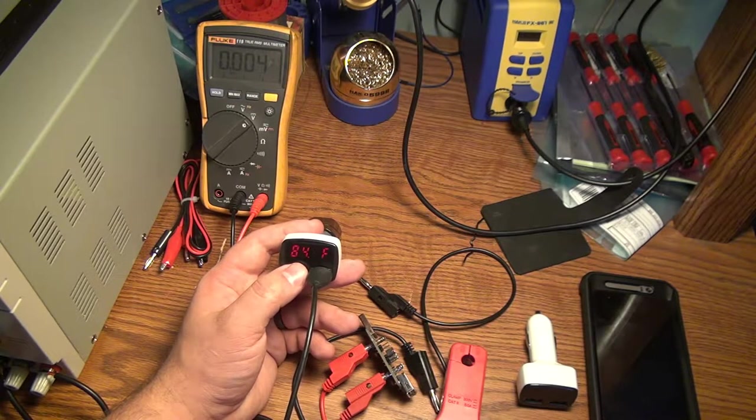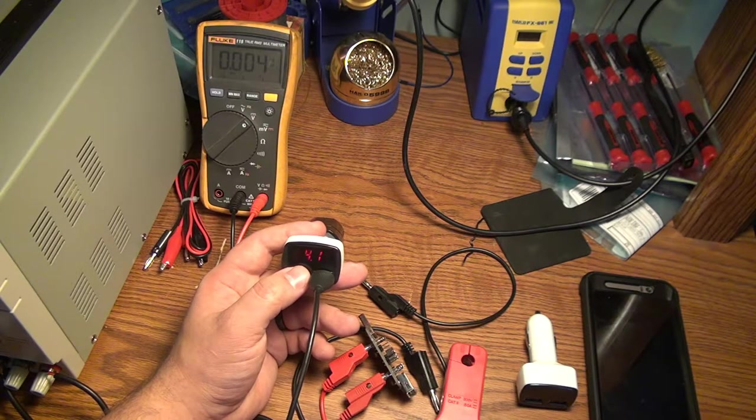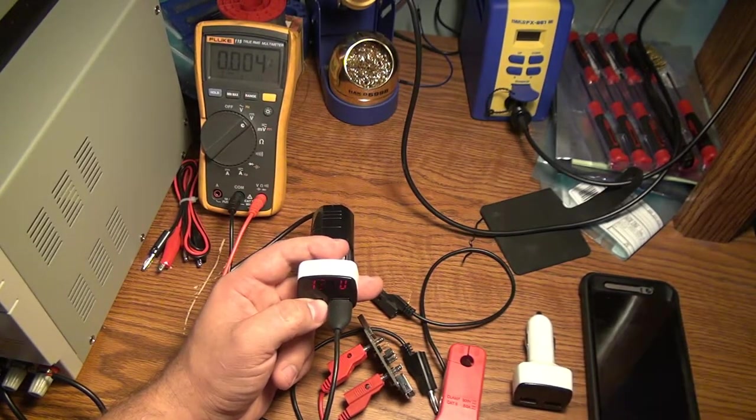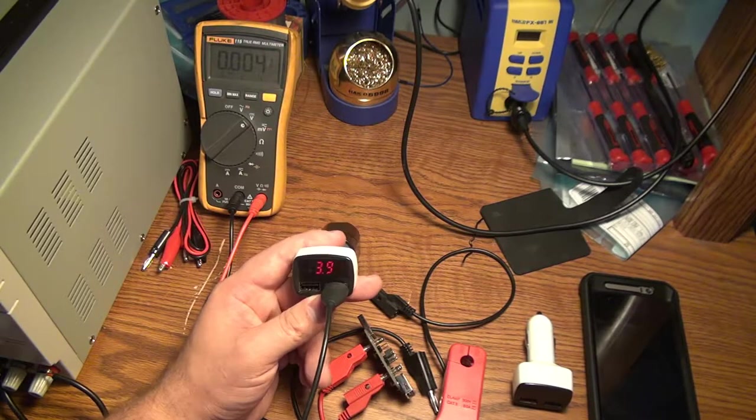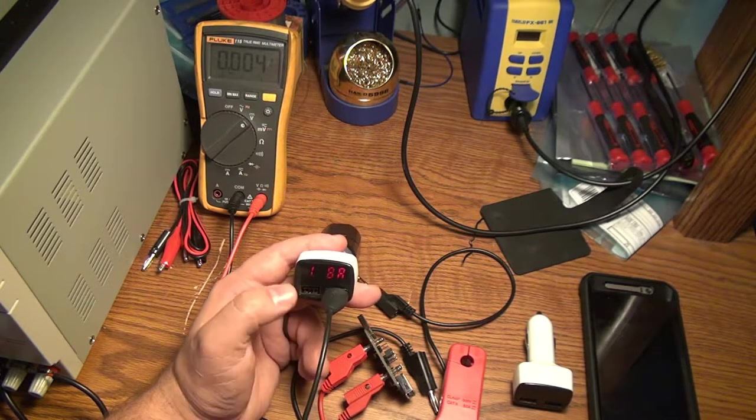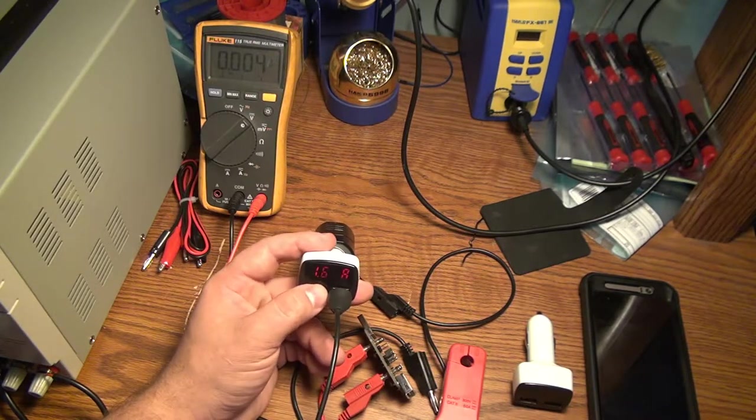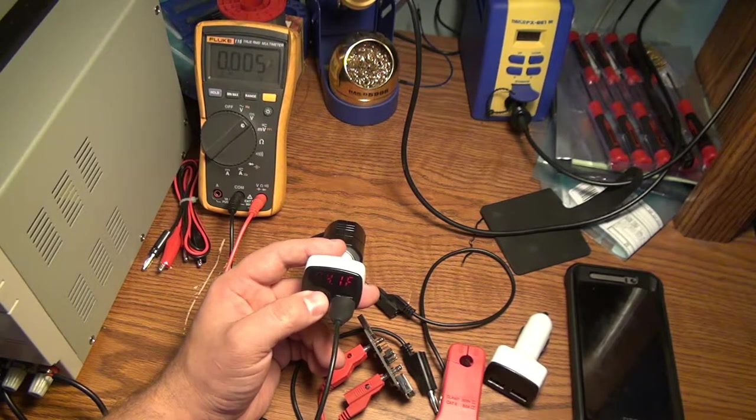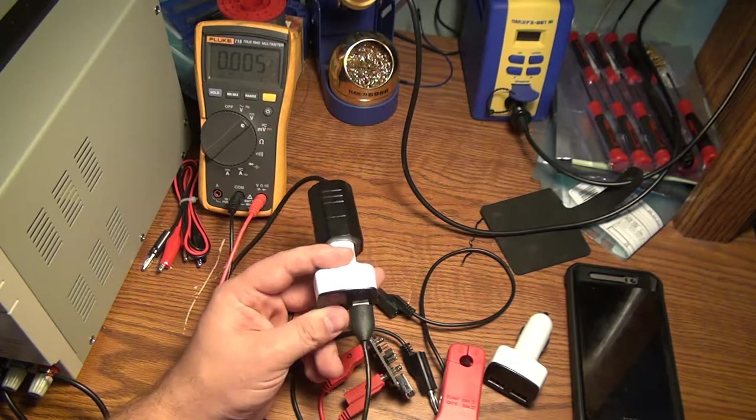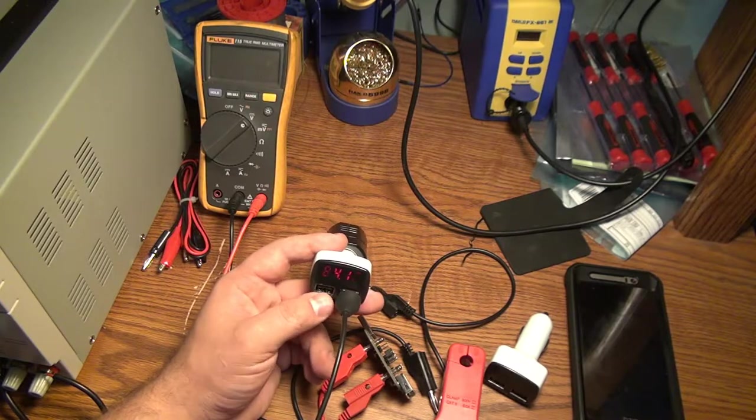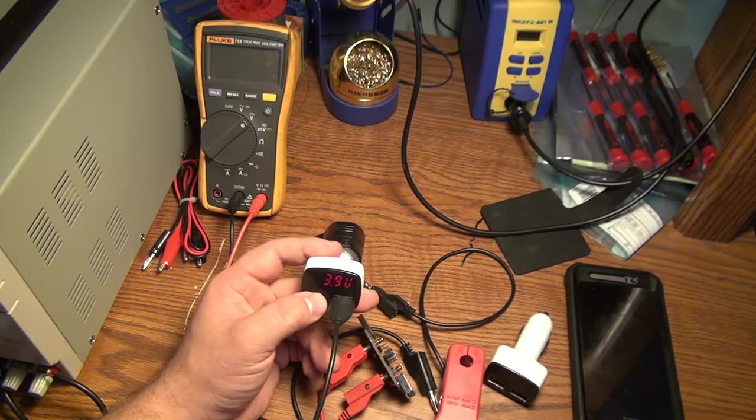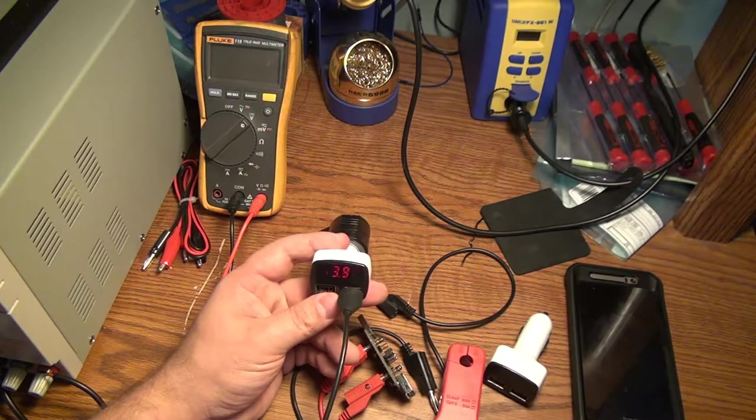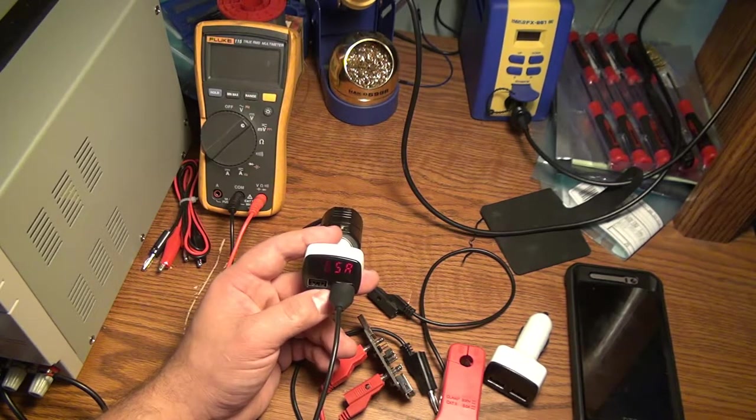Right now it's showing 84 degrees and it's not nearly that hot in here. The reason I think it's showing that is because drawing 1.7 amps to the phone, this is dissipating a substantial amount of power inside and the temperature sensor must be picking that up. If we leave this going for a while I've seen it go as high as 90 degrees. The temperature sensor is just feeling that internal heat.